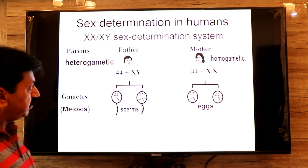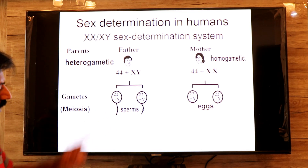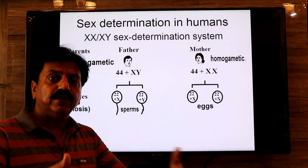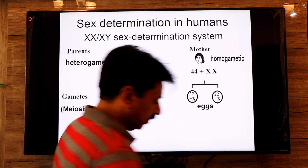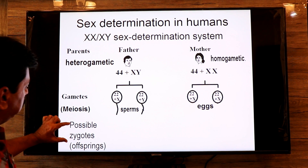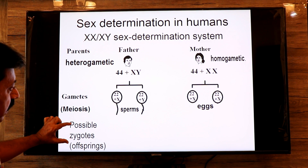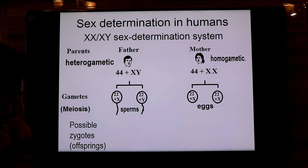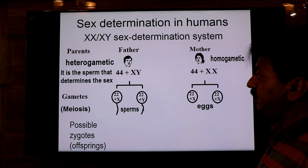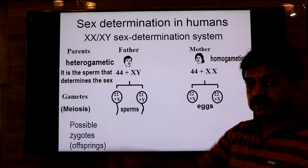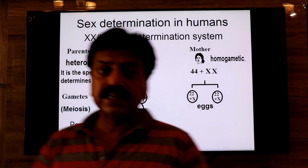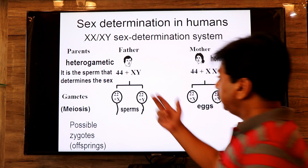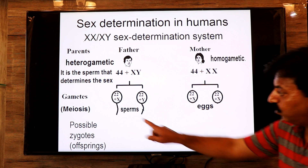In case of human beings, it is the sperm which determines the sex of an individual. It is the sperm that will determine whether a male or female will develop from the zygote. We will now discuss the possible zygotes in offspring from this mating and what will be the sex of those offspring. This is a very important point: it is the sperm that determines the sex of an individual.